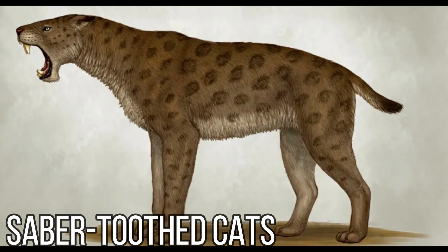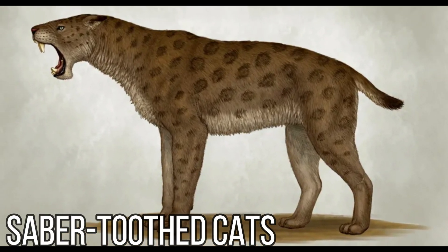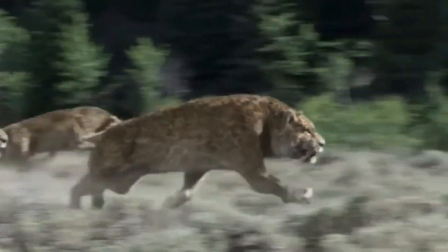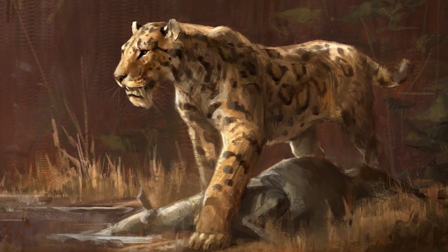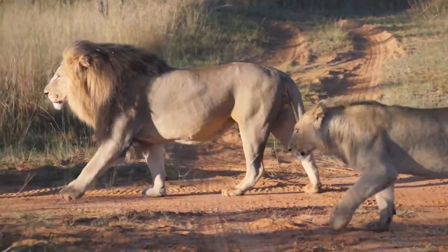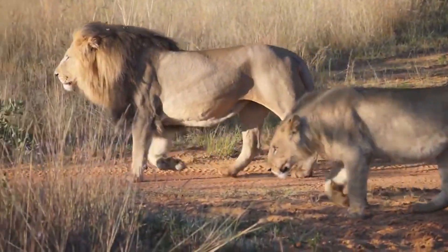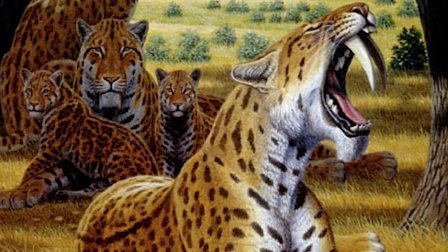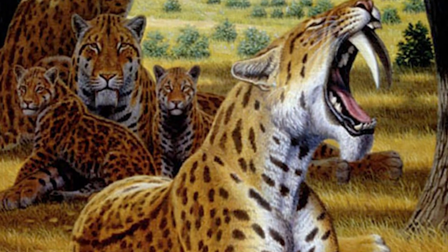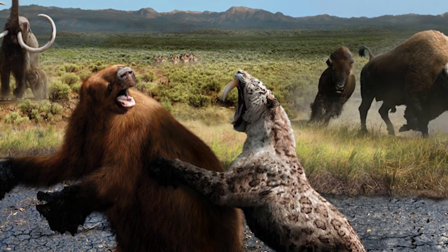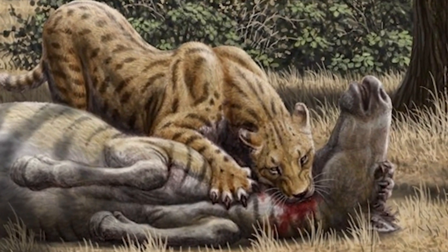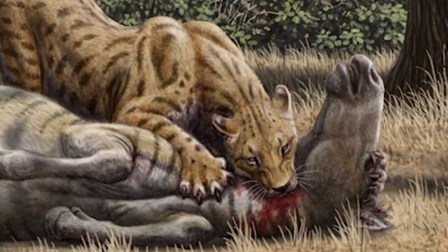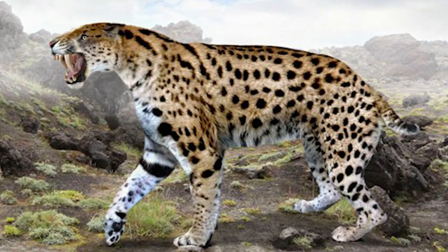Lastly, we will discuss saber-toothed cats. Saber-toothed cats, commonly referred to as Smilodons, were among the apex predators of the Ice Age, known for their iconic elongated canine teeth and formidable hunting abilities. These prehistoric felines belonged to the genus Smilodon and were distinct from modern-day cats. Smilodons were characterized by their robust build, well-developed forelimbs, and short bob tails, and were highly specialized predators adapted for ambushing and subduing large prey.